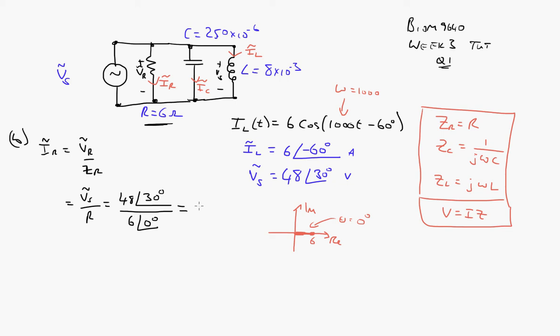So it's going to be, divide the magnitudes. 48 divided by 6 gives me 8. And subtract the angle. So 30 minus 0 is 30 degrees. And that's current, so it's amps. So the current in the resistor is going to be a sinusoidal current. It's going to have an amplitude of 8 amps. And it's going to be shifted by 30 degrees, which is 1/12 of a period of the sinusoid itself.